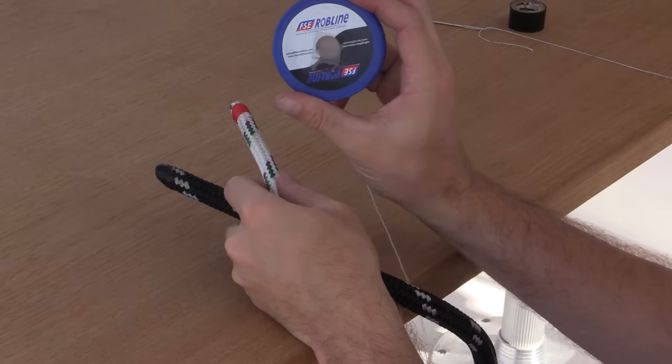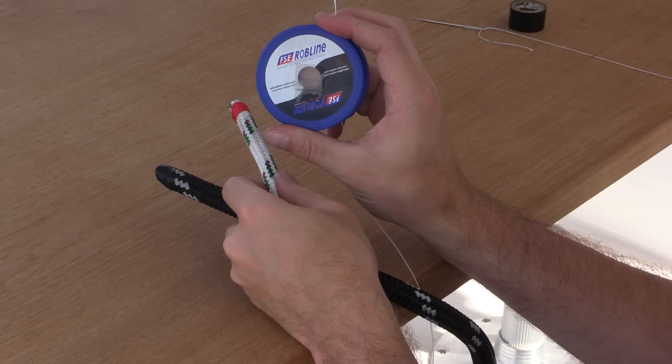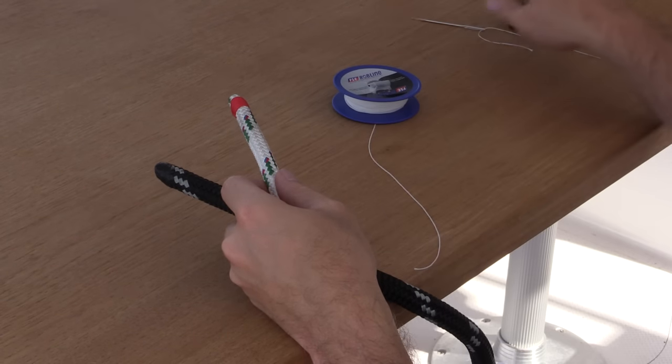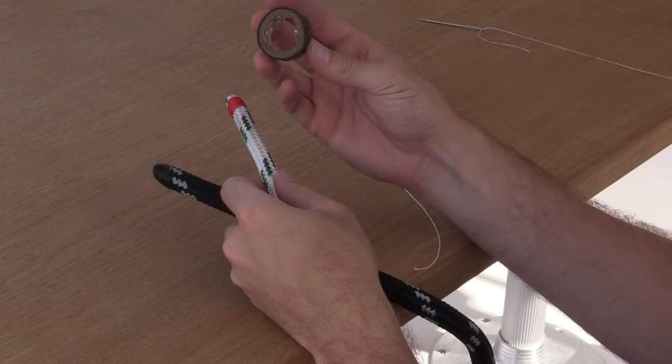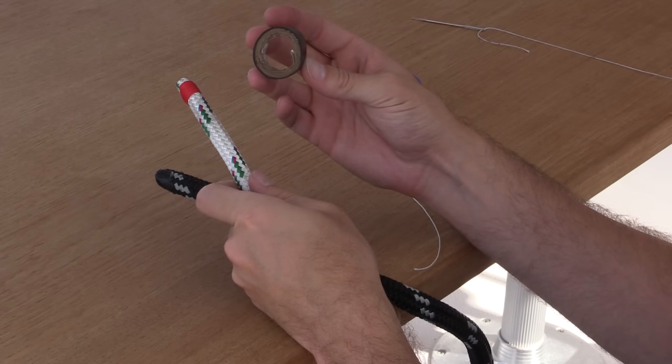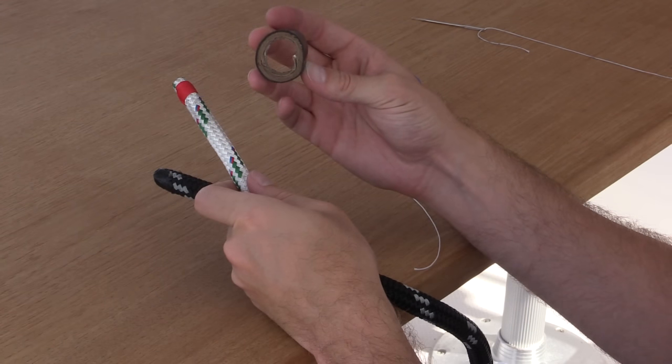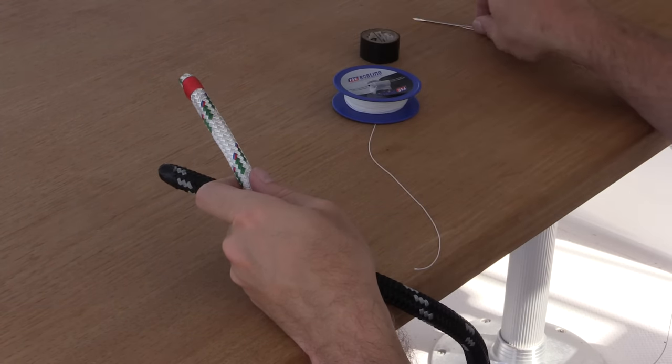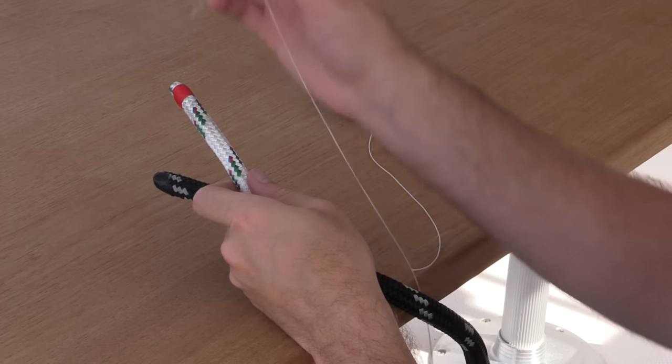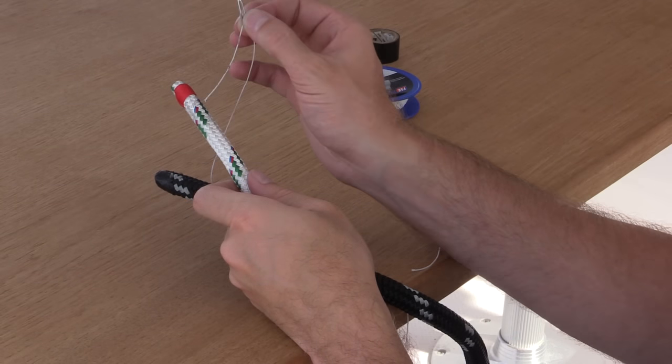In order to do this, I've got just some regular old whipping twine. We'll be using some electrical tape to connect the lines together real nice and tight, and then just a good old little needle with some of the whipping twine already attached.